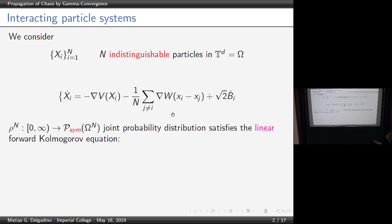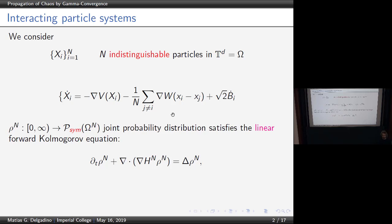If you look at the forward Kolmogorov equation — what is the probability that you find the particles — it will satisfy this linear equation. This is a linear equation, but it is high-dimensional. As you increase the particles, this increases the dimension of the state space. And we want to pass to the limit in this equation.